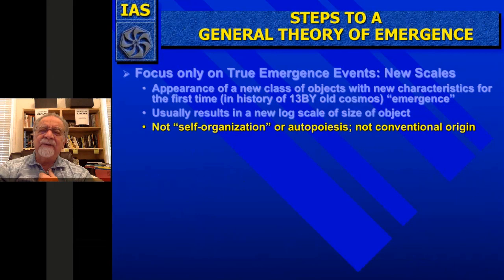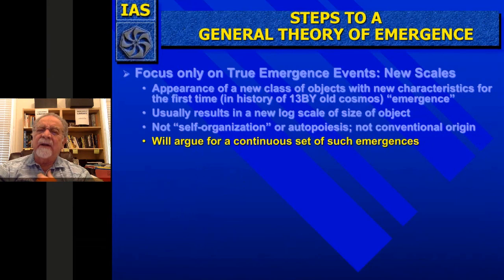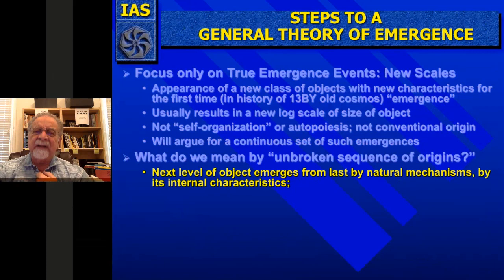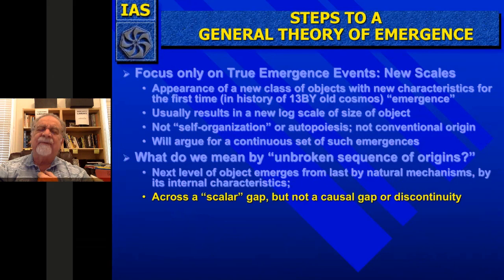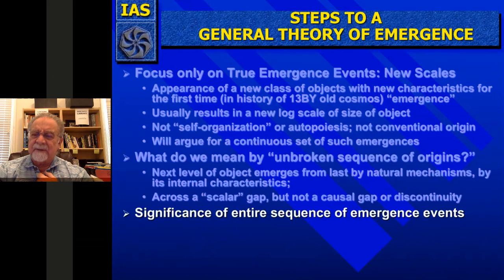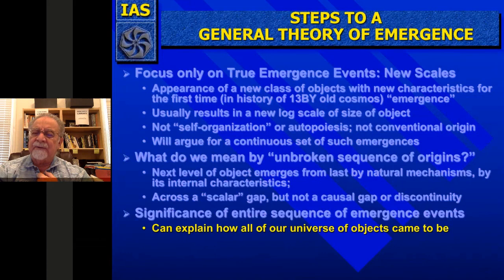We call the appearance of a new type of object in the universe 'Big E emergence' to distinguish it from the little-e emergences that systems engineers and others talk about. It usually results in a new log scale of size of object with different qualities. It's not cell organization or autopoiesis — it's not a conventional origin of anything that originates on and within a scale. We'll argue for a continuous set of such emergences. The next level of object emerges from the last by natural spontaneous mechanisms, through their internal characteristics.